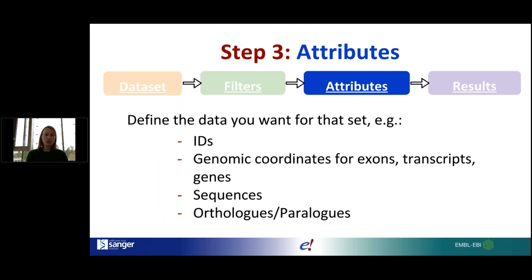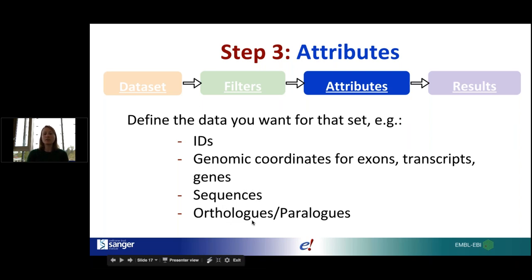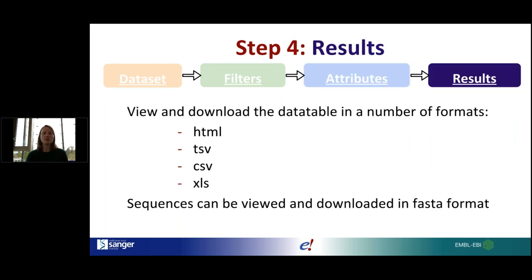Attributes are the answers you want regarding your filtered dataset. Continuing the previous example — if we're looking for entities associated with a genomic region and a phenotype — we could retrieve gene or transcript IDs, the genomic coordinates of those entities, download their sequences, or find homologues in other species or the same species associated with those filters. Results can be generated in tabular format and viewed in the browser or downloaded as a spreadsheet, or retrieved as FASTA format for sequence data.